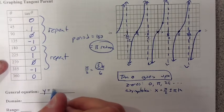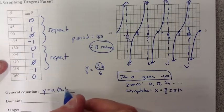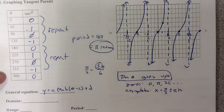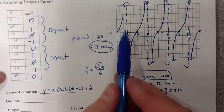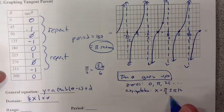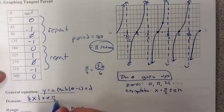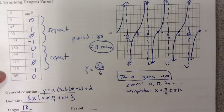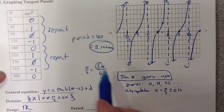The general equation for tangent is y = A tan(B(θ - C)) + D. The domain is going to be everything but the asymptotes: x such that x cannot equal our asymptotes, which we just wrote, π/2 plus or minus πk. The range is all real.